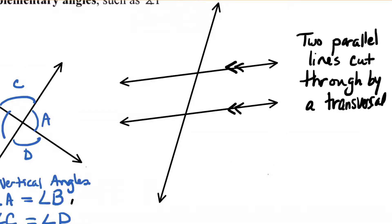So anytime you have two parallel lines cut through by a third line, we call that line a transversal. And there are many angles formed. And some of the pairs have relationships that we've already seen. For example,